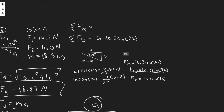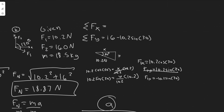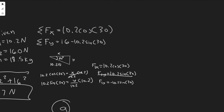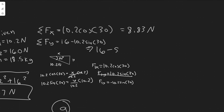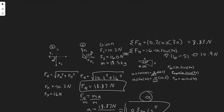So plugging in: the sum of forces in x is just 10.2 cosine of 30, which is about 8.83 newtons. The sum of forces in y is 16 minus 10.2 sine of 30, where 10.2 sine of 30 equals 5.1, giving us approximately 10.9 newtons. These are the Fx and Fy values to plug into the net force formula.